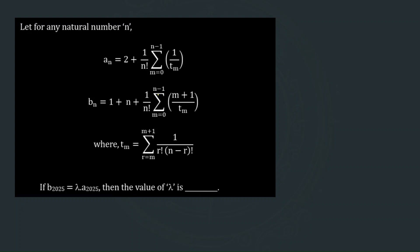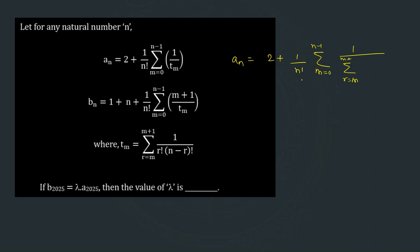Let us decode the expressions given in this question and try to simplify these complex expressions first. We write aₙ equal to 2 plus 1 over n factorial, summation with m running from 0 to n−1, then 1 over tₘ. Since tₘ is given, it becomes summation r equal to m to m+1 of 1 over r factorial (n−r) factorial. This form is somewhat familiar — we need to convert this series into a summation of binomial coefficients.